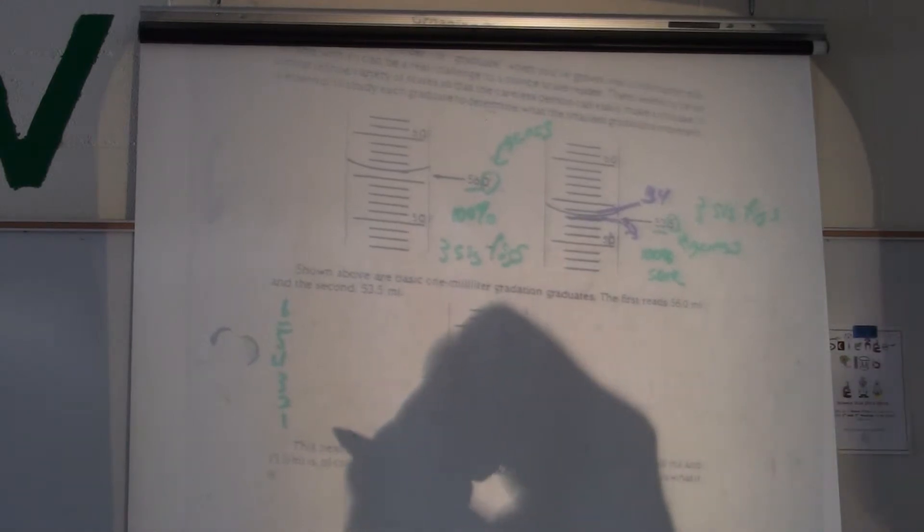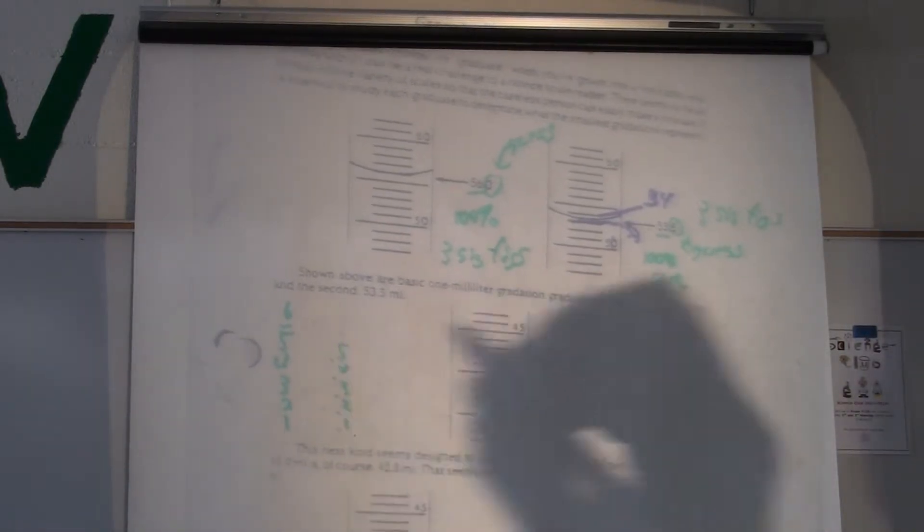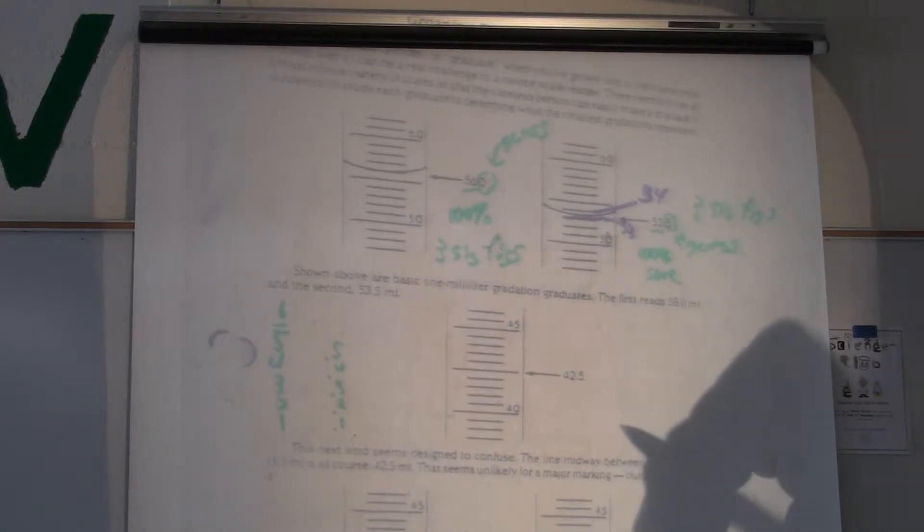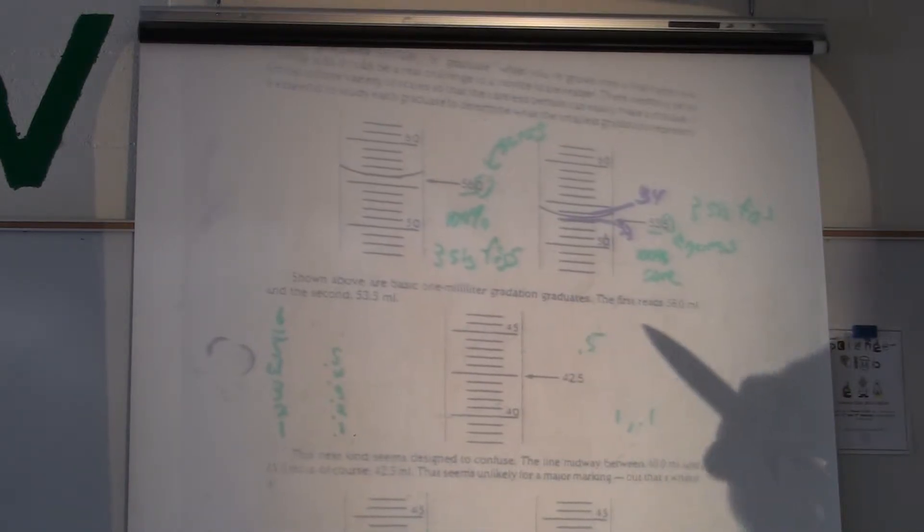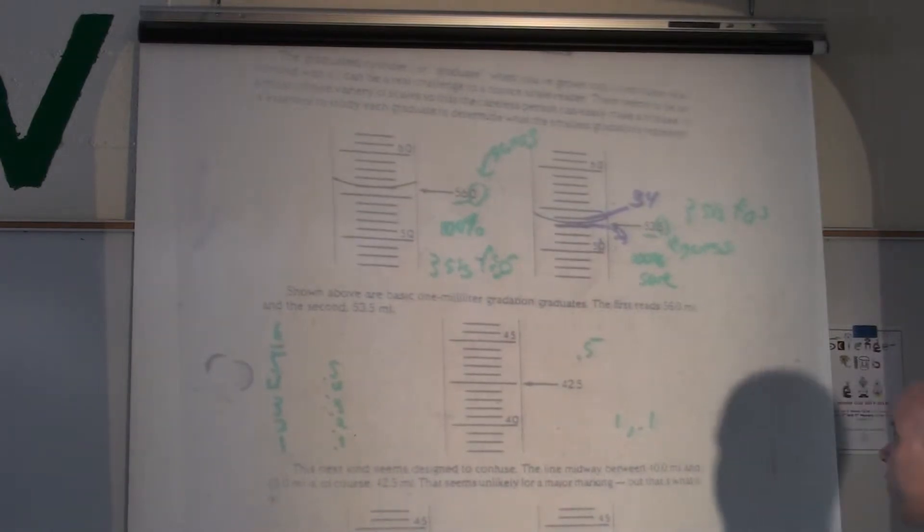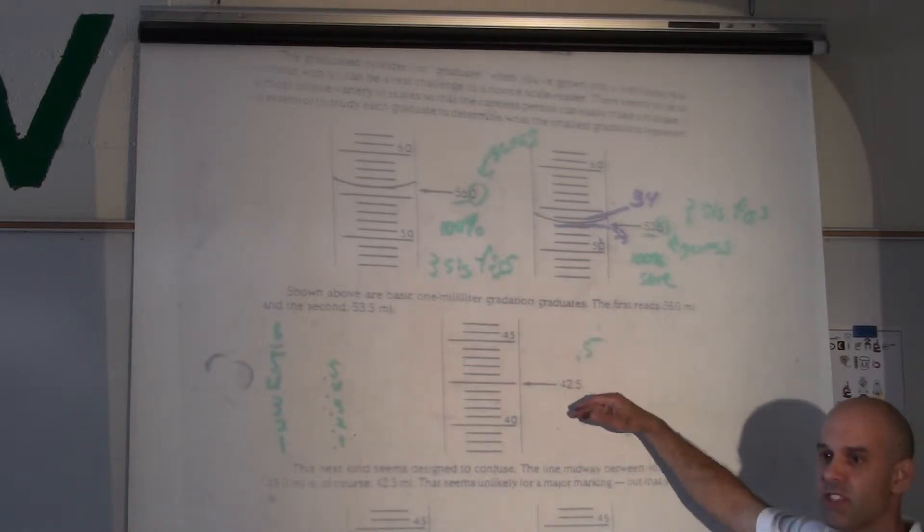If you want to guess out to the hundredths, it must go up by .1. So, either you've got to go up by one or .1. If you're going up by .5, .5 is not going up by tenths.